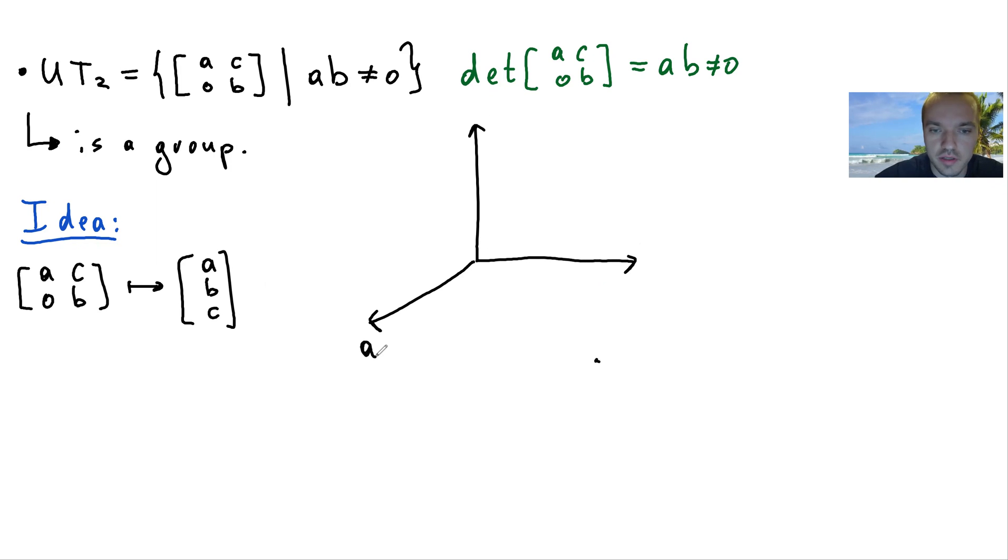So right now I can think about this matrix as three-dimensional space. Let me sketch this three-dimensional space. Okay, and where is my... it's going to be my a axis, b axis, and c axis. But what do we know about this three-dimensional space? We know that a times b cannot be equal to zero.